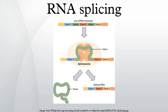Splicing pathways: Several methods of RNA splicing occur in nature. The type of splicing depends on the structure of the spliced intron and the catalysts required for splicing to occur.